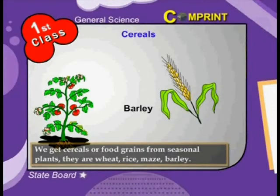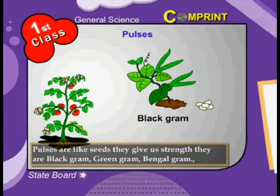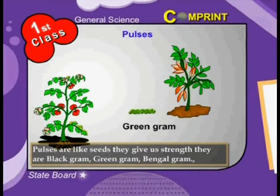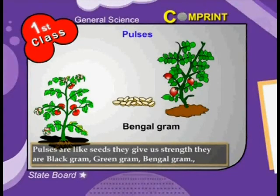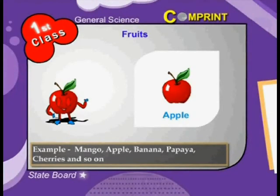Pulses: pulses are like seeds. They give us strength. They are black gram, green gram, Bengal gram, and so on. Fruits: fruits are of different shapes and sizes and produce a sweet smell.